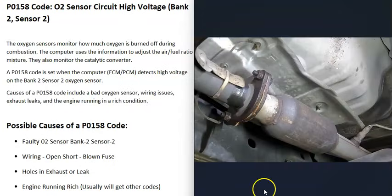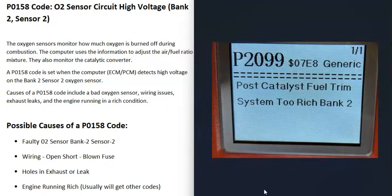The last thing on the list is that the engine is running in a rich condition, which basically means more gas than air is going into the engine. If that happens, that O2 sensor is going to pick that up and cause the voltage to be higher at that O2 sensor. But usually if that happens you're going to get other codes.